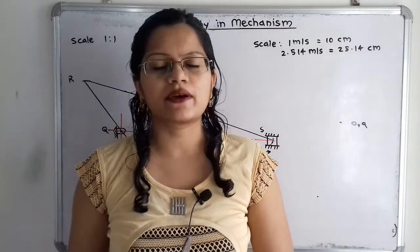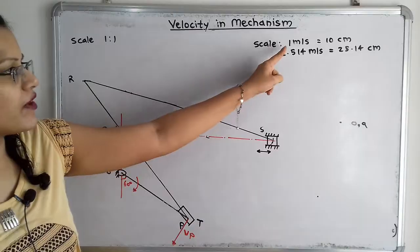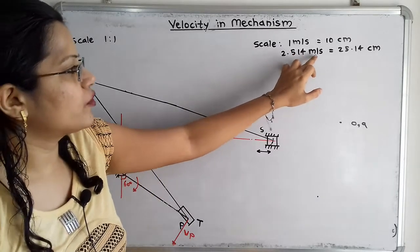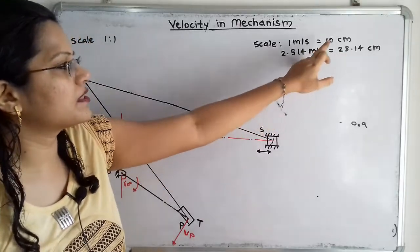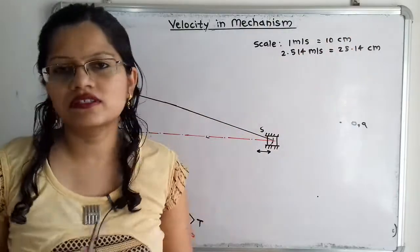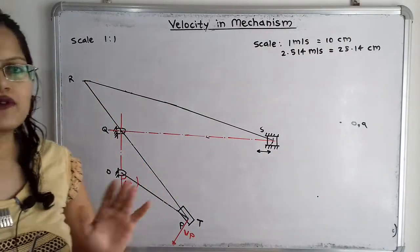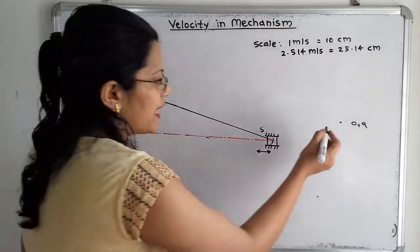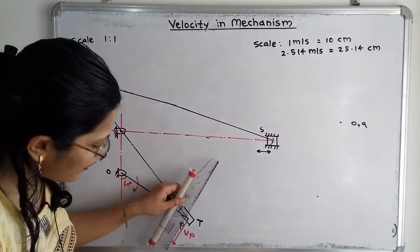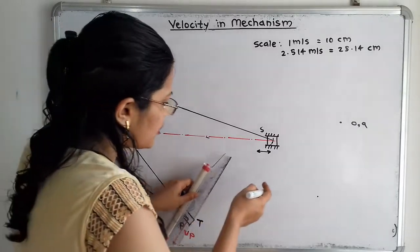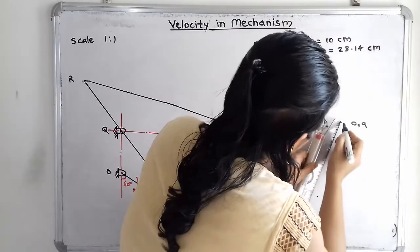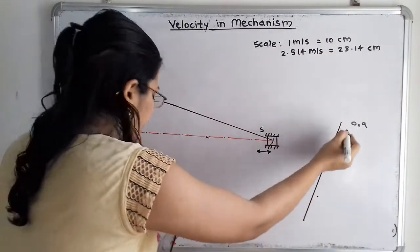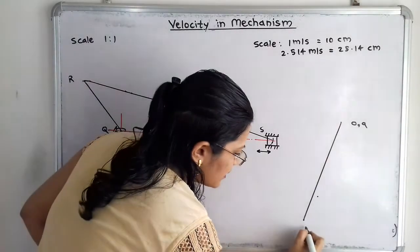Now we draw the velocity diagram with a suitable scale: 1 m/s = 10 cm. The velocity of P with respect to O is 2.514 m/s, so we draw a vector of length 25.14 cm. We take a fixed point representing O and Q, draw the line in the downward direction parallel to VP. The initial point is O and the final point is p (small p). This vector op represents VP = 2.514 m/s.